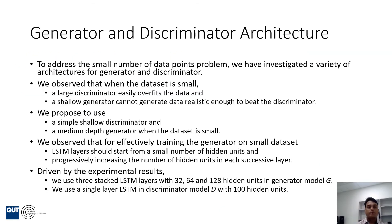To address the small dataset problem, we investigated a variety of architectures for the generator and discriminator. We observed that if the discriminator uses a very large network, it easily overfits to the data. On the other hand, if we use a small network for the generator, it cannot generate realistic data that can challenge the discriminator. Therefore, we propose using a shallow small network for the discriminator and a medium depth network for the generator when the dataset is small.